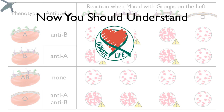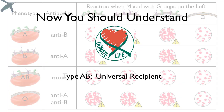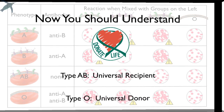All you have to remember is that you can't give foreign antigens to someone. It should make sense now that type AB is the universal recipient because you can't give them anything that they don't already have. And type O is the universal donor because they are the plain donuts and they don't excite anybody's immune system.